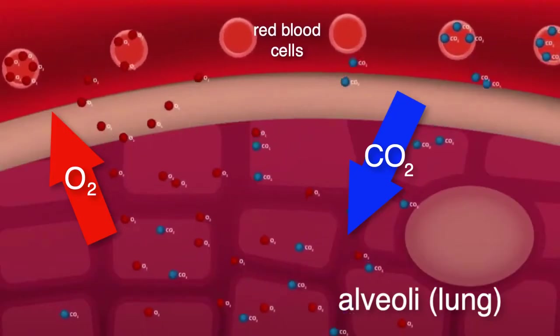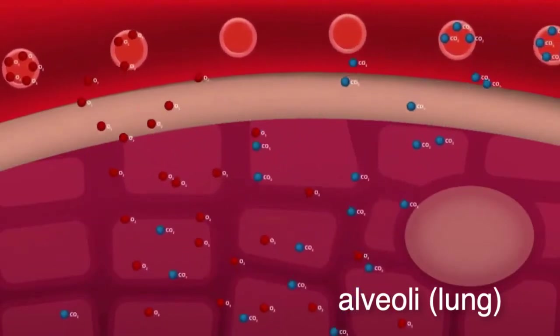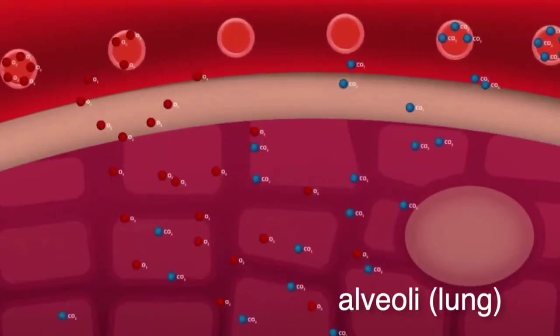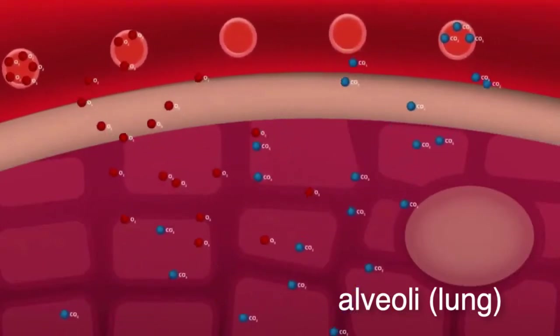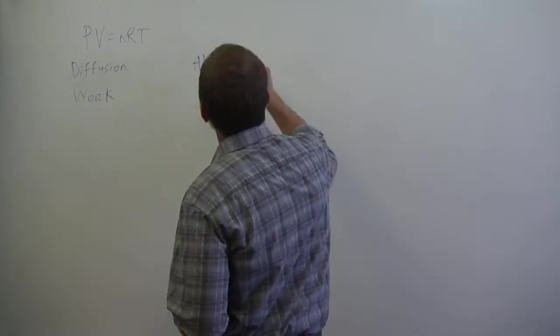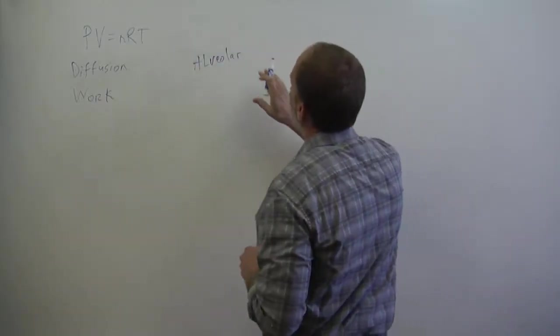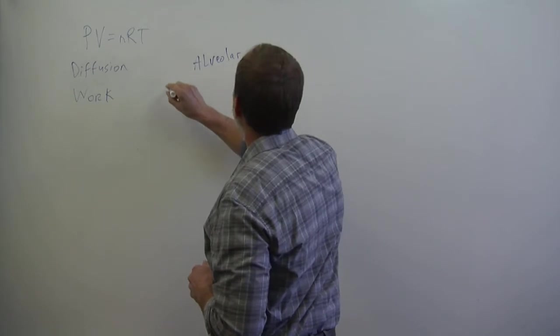So diffusion is something that we use all the time in medicine, and we look at it for patients who are doing well and not doing so well. Diffusion is a function of how much air gets from the alveolar space. So this is the lung itself. Air fills the alveolar space.